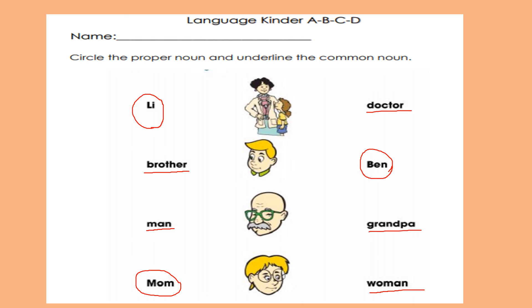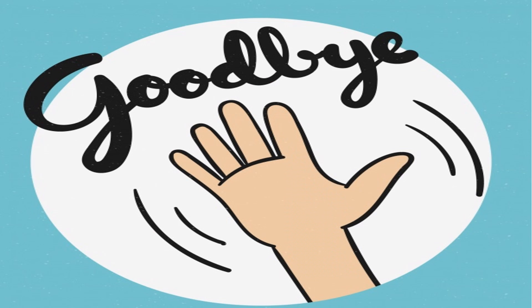Here we have two common nouns: he is a man, and he is a grandpa. Here we have a woman, and we call her mom. Mom is a proper noun. Woman is a common noun. Well guys, this is all about nouns. I hope to see you in the next class. Bye!